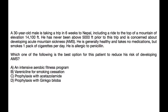Vignette two: A 30-year-old male is taking a trip in six weeks to Nepal, including a ride to the top of a mountain at 14,100 feet. He has never been above 5,000 feet and is concerned about developing acute mountain sickness. He is generally healthy, takes no medications, smokes one pack per day, and is allergic to penicillin. Which is the best option to reduce his risk of AMS? Prophylaxis is given with acetazolamide or dexamethasone — and since his allergy is to penicillin (not sulfa), acetazolamide is appropriate.